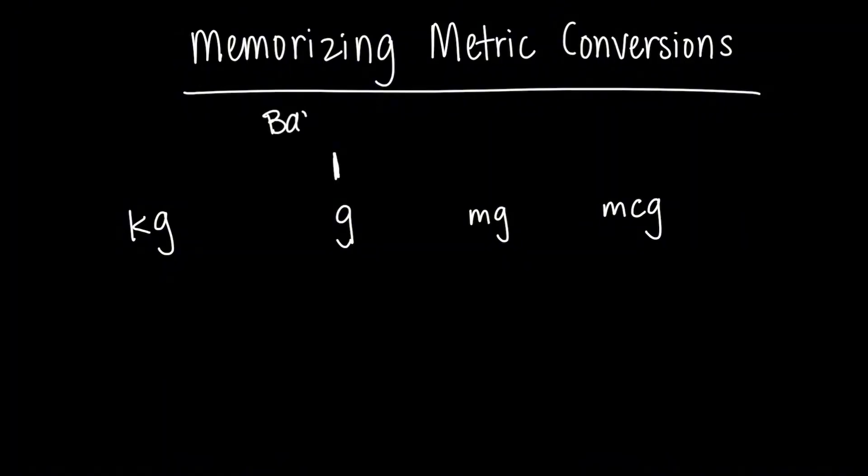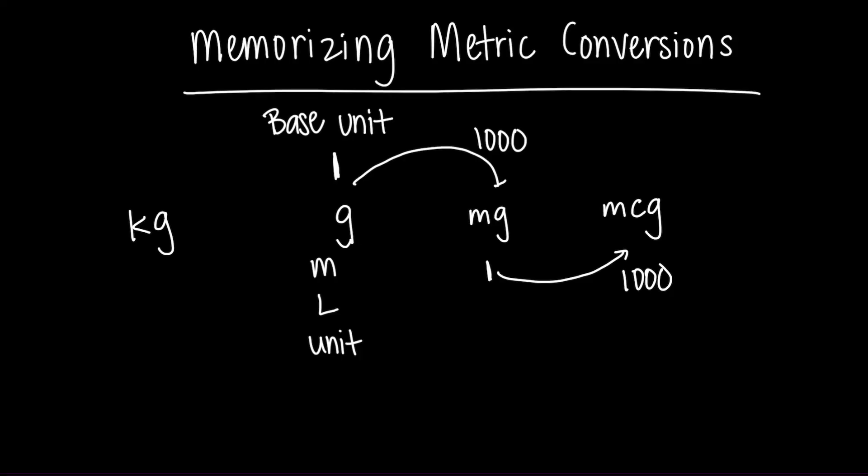So the one is going to be the base unit. So it's either a gram, a meter, a liter, or a unit. So one is the base unit. If you break that down, you'll get a thousand smaller pieces, which is the milligram. And if you get one milligram and break it down into a thousand smaller pieces, it's a microgram.